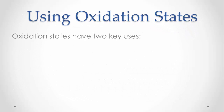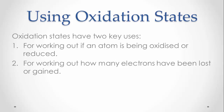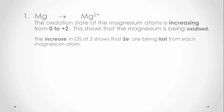Working out the oxidation state of an atom is a very powerful tool, especially in redox chemistry. There are two things to be able to do: firstly, determine if an atom is being oxidised or reduced using oxidation numbers; and secondly, use oxidation numbers to work out how many electrons have been lost or gained. When magnesium atoms are reacted to form magnesium ions, the oxidation state increases from 0 to +2, showing that magnesium has been oxidised, and the increase of 2 shows that 2 electrons have been lost from each magnesium atom.